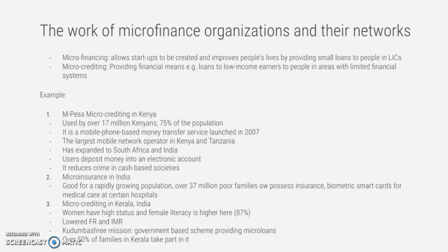One example is M-Pesa, a microcrediting service in Kenya. It's used by over 17 million Kenyans — 75 percent of the population. It is a mobile phone-based money transfer service launched in 2007, and is the largest mobile network operator in Kenya and Tanzania, having expanded to South Africa and India.